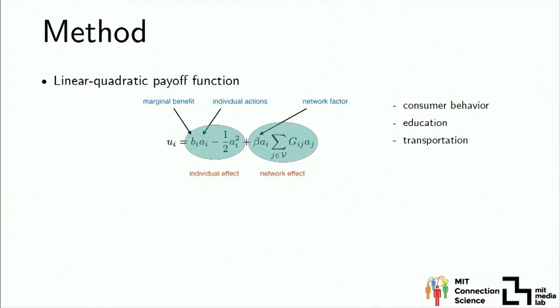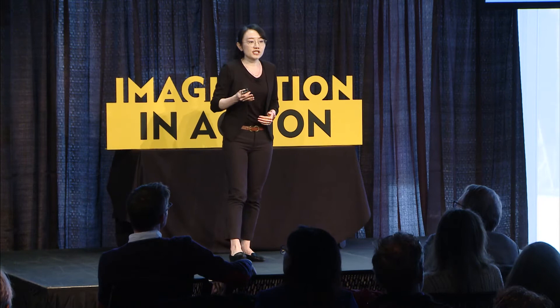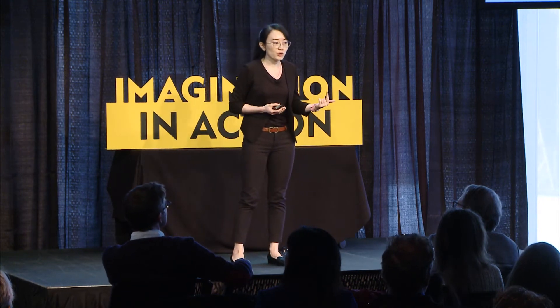What I said can be formulated as games played on networks. When you are making a decision, there is some mental math you're doing in your mind: how much benefit you'll get — we call it marginal benefit — how much cost you need to pay, and the decisions of your neighbors, because that will also influence your decision. We predict the decisions people make using Nash equilibrium, which is the steady state where people will not deviate because if they deviate from the action, their utility will decrease.